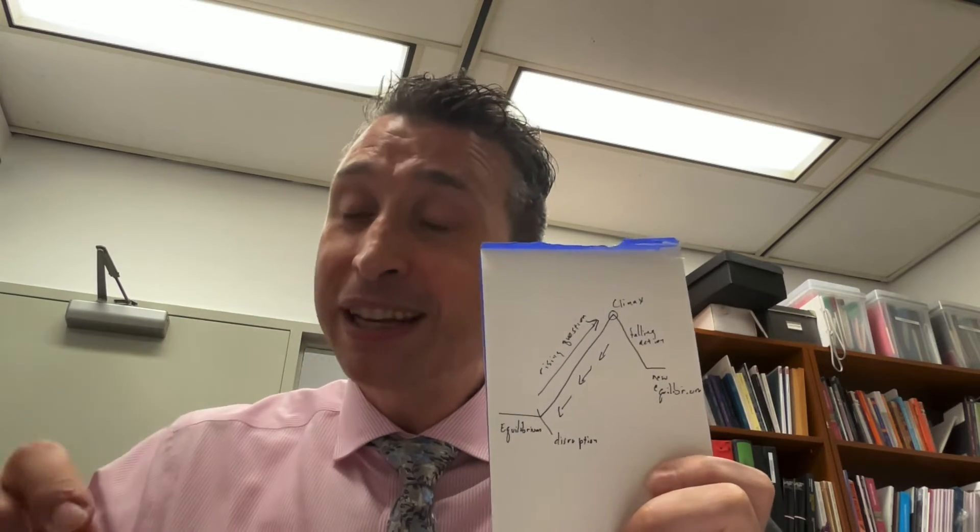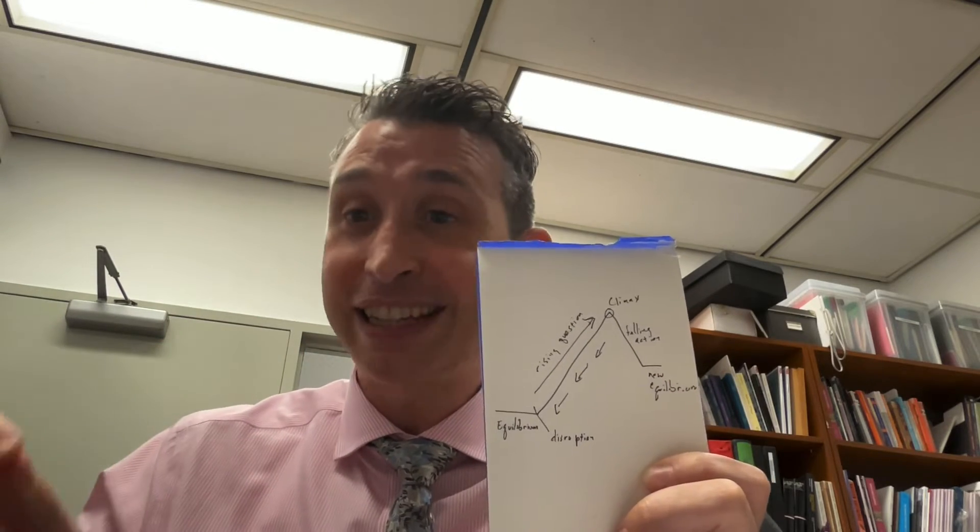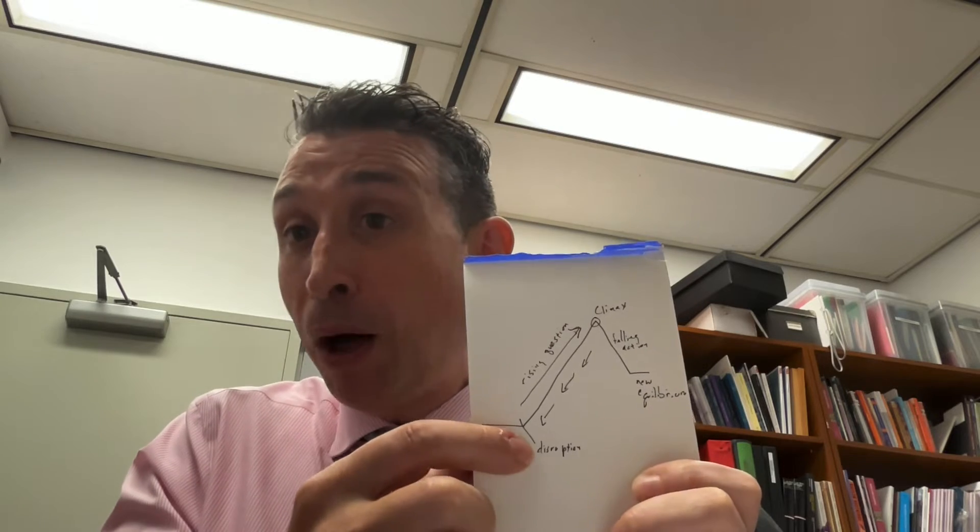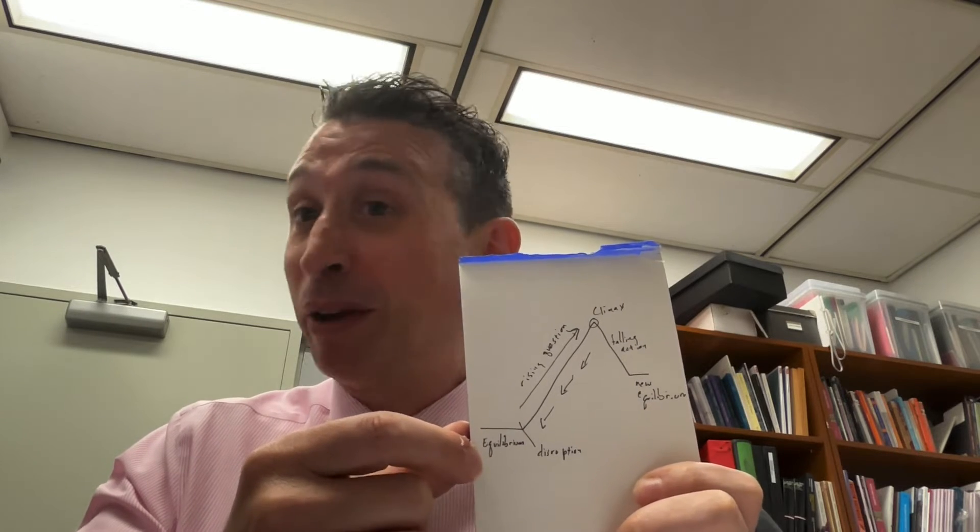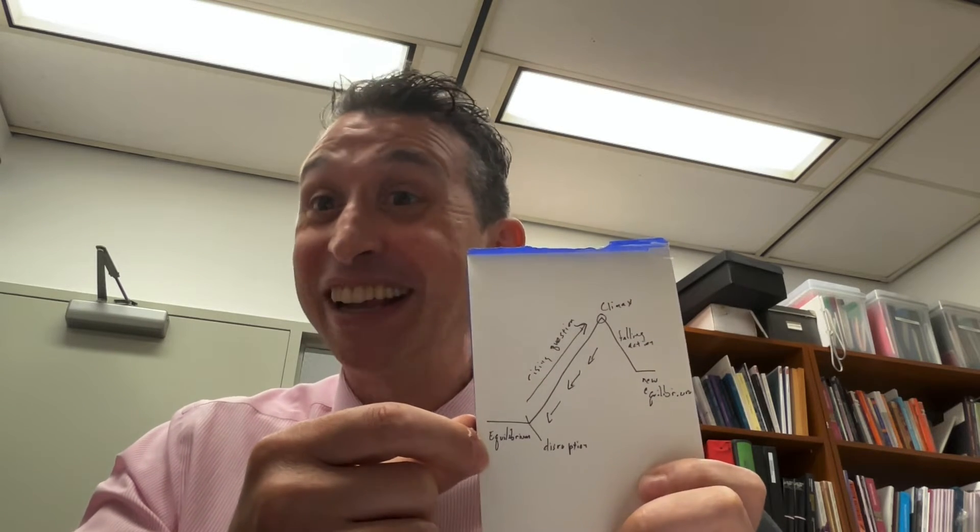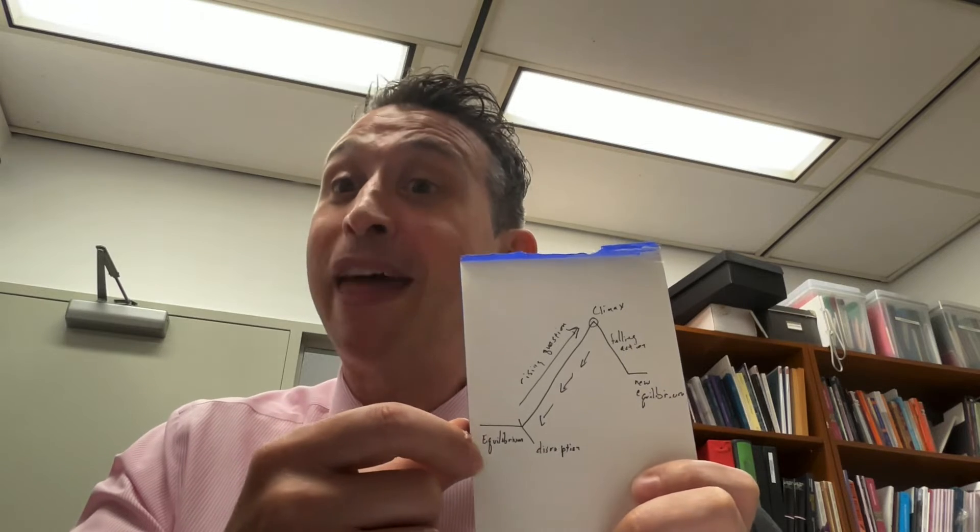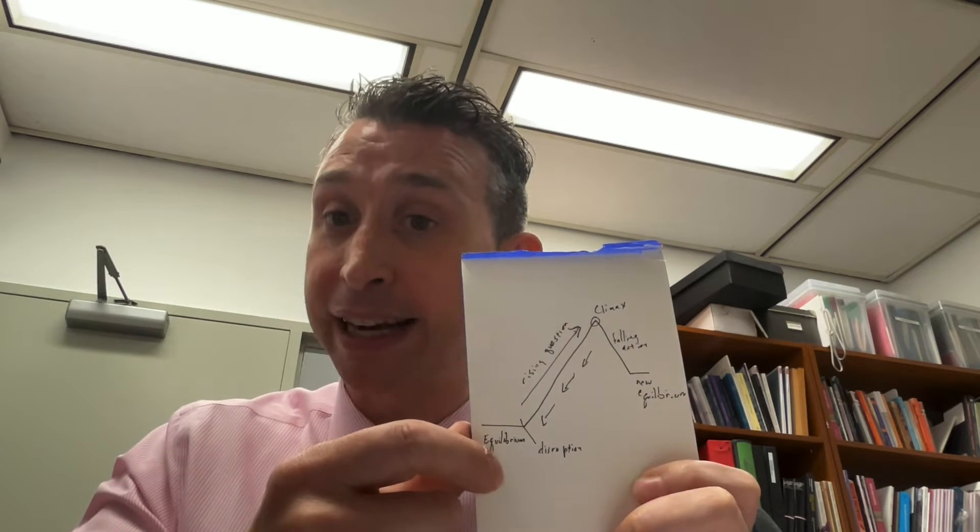Then there's a disruption. The disruption means the equilibrium can't continue. Now the prince announcing a ball might seem kind of out of left field, but the bottom line is that's the moment Cinderella says, oh, I'm not putting up with this anymore. Like I want something different. And that's what makes the equilibrium unsustainable.